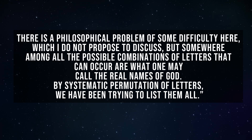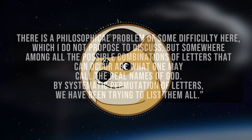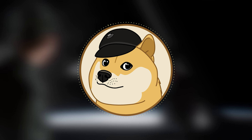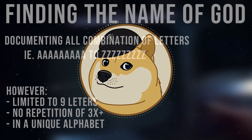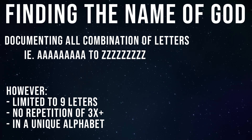The monk explains: "There's a philosophical problem of some difficulty here, which I do not propose to discuss. But somewhere along all the possible combinations of letters that can occur are what one may call the real names of God. By systematic permutation of letters, we have been trying to list them all." So by this description, they're essentially brute-forcing the name of God. The very first thing they wrote was the letter A nine times, and the final thing they write is the letter Z nine times. However, there are some restrictions — no letter should be repeated more than three times in a row — and they've got their own alphabet.